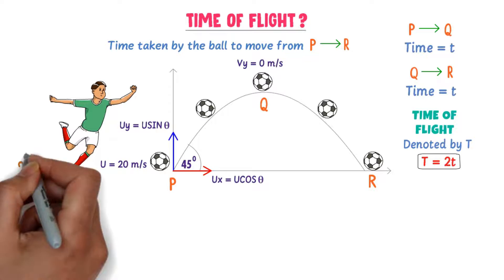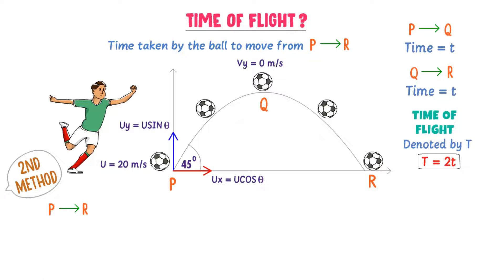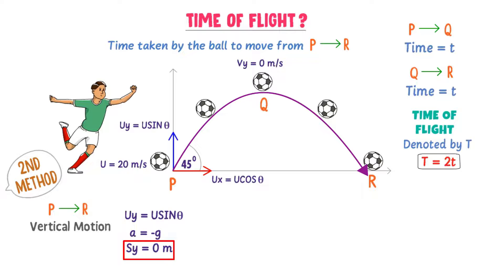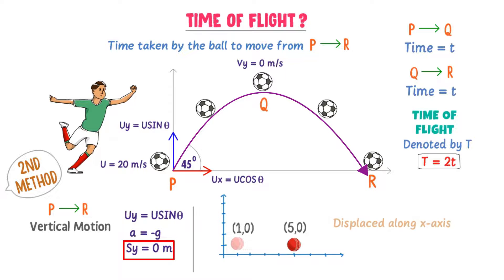Let me teach you another method of deriving the equation of time of flight. Consider the vertical motion of the ball from P to R. The initial velocity in the vertical direction is u sin θ, the acceleration a = −g, and the vertical displacement Sy = 0 meters. To explain why: at point P the ball is on the x-axis, and at point R it is again on the x-axis, so while the ball is displaced horizontally, its vertical displacement Sy equals zero.